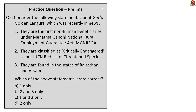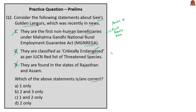The second question is about Gee's golden langurs. The first statement — that golden langurs are the first non-human beneficiaries under the MGNREGA scheme, with fruit-bearing trees planted to help them meet their food requirements in their natural habitats — is correct. The second statement is wrong because golden langurs are classified as endangered, not critically endangered, as per the IUCN Red List. The third statement is also wrong as golden langurs are found only in the northeastern part of India, not in Rajasthan. The correct answer is option A, only statement 1.